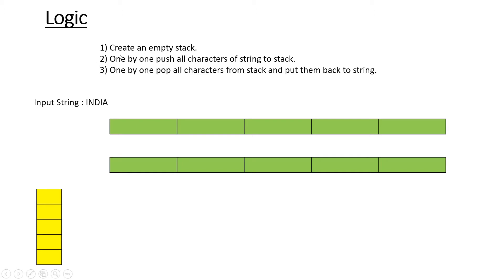The logic is: first, create an empty stack — in this diagram you can see I have created an empty stack. Then, one by one push all the characters of the string to the stack. After that, one by one pop all the characters from the stack and put them back into the string. That final string will be the reversed string.